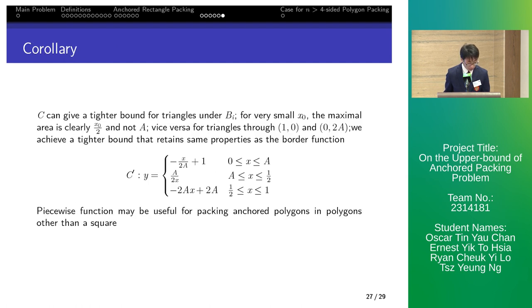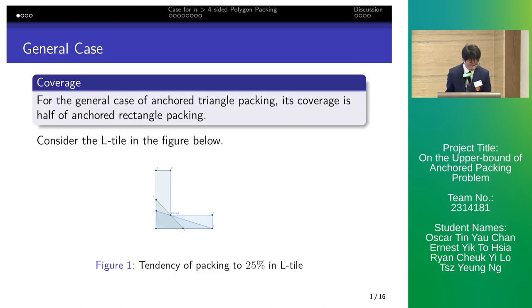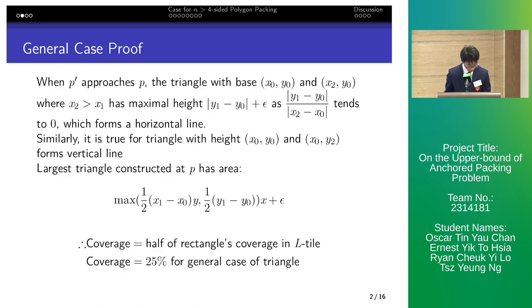The general case of anchored triangle covers half of them on anchored rectangle. In an L tile, where p' I chose p on the diagonal, lines from x to y are near horizontal and y to x near vertical. The area of maximal triangle at p is shown. It shows one half of rectangle's coverage and gives a coverage of 25%.